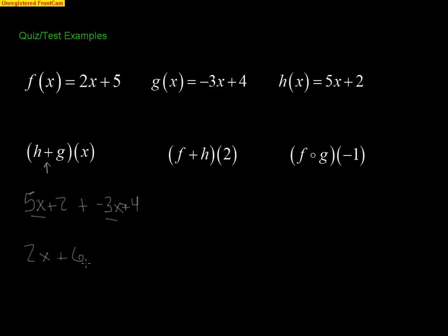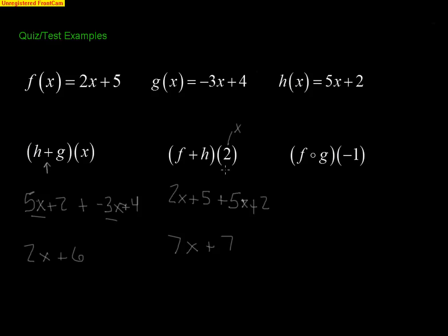This next one looks a little different: (f+h)(2). That means you add f and h first, then plug in 2 for x. So f plus h is 2x+5 plus 5x+2, combining like terms gives 7x+7. Now because I have the 2, I plug in x=2: 7(2)+7 = 14+7 = 21. So I actually get a number for an answer when there's a specific value given.